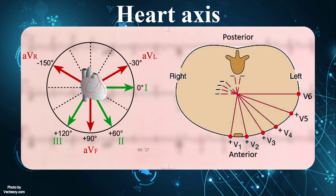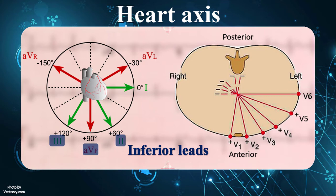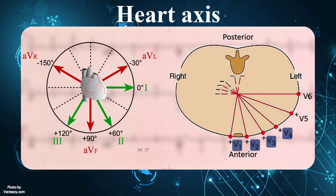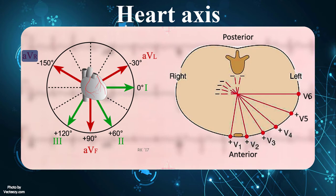Based on cardiac anatomy, heart leads are classified into different categories. Leads 2, 3, and AVF view the inferior surface and are known as inferior leads. Leads V5, V6, 1, and AVL view the lateral surface and are called lateral leads. V1 to V4 view the anterior surface and are known as anterior leads. Lastly, lead AVR is described as the forgotten or neglected lead and views the right upper side of the heart.